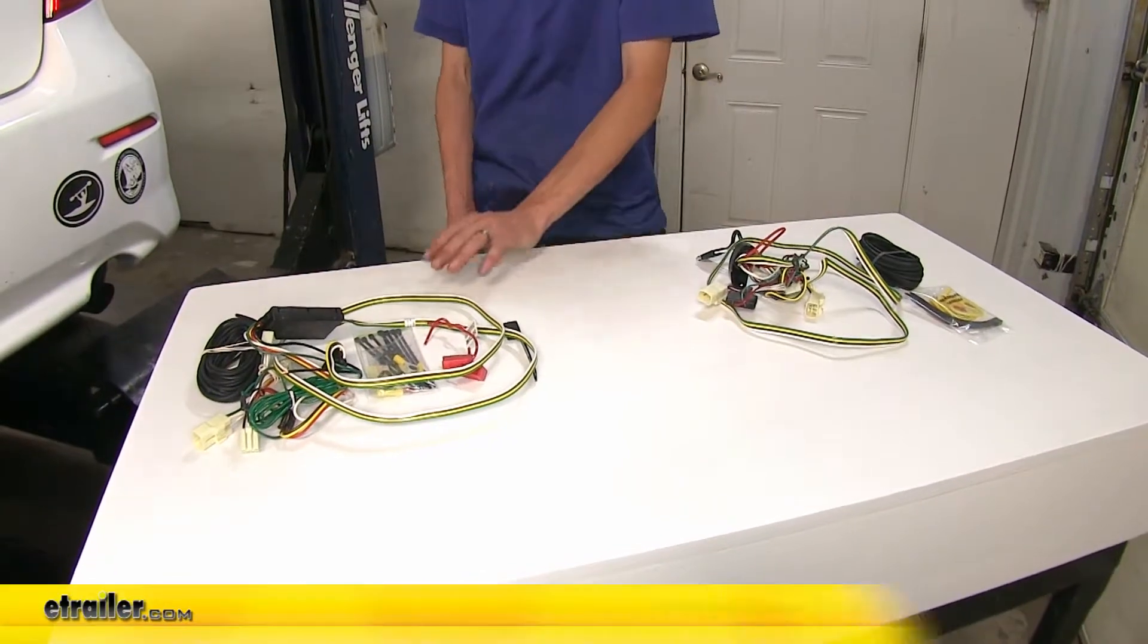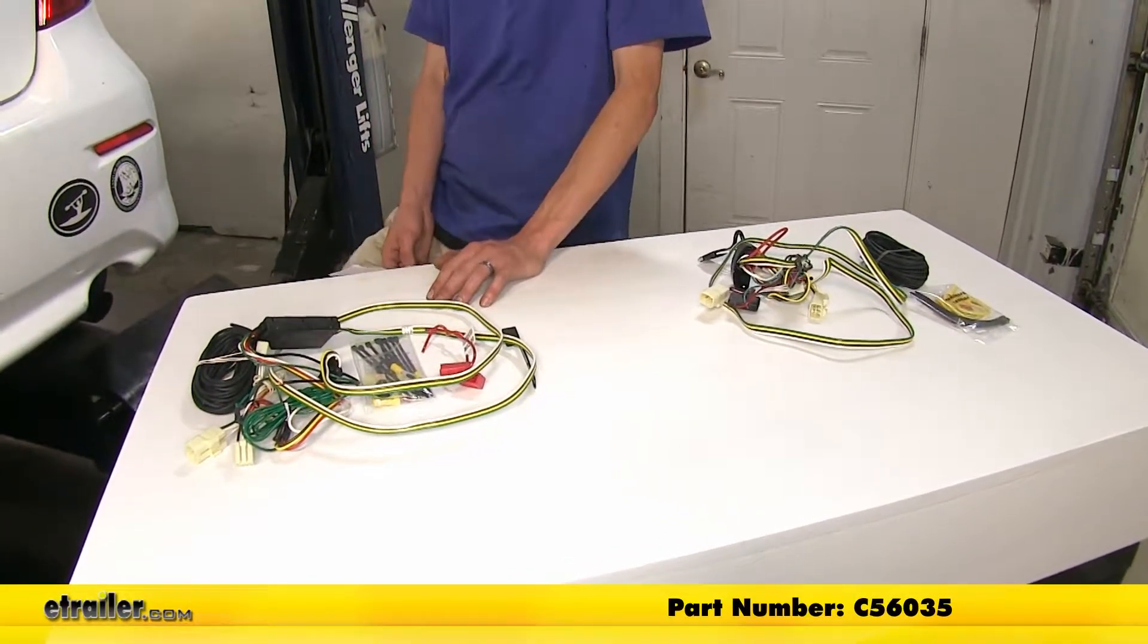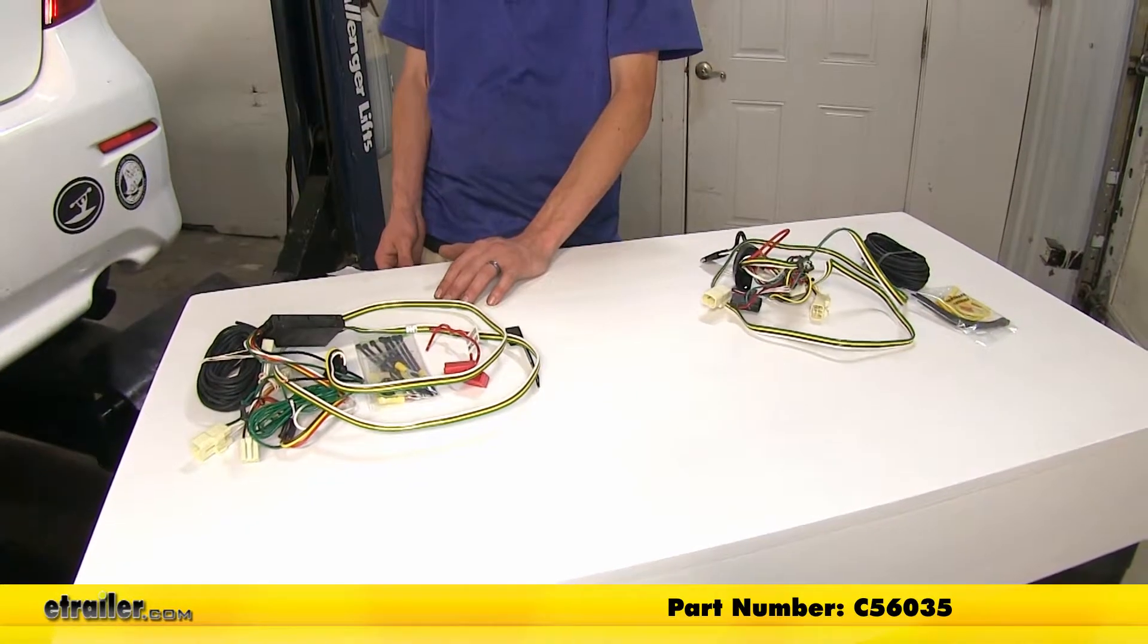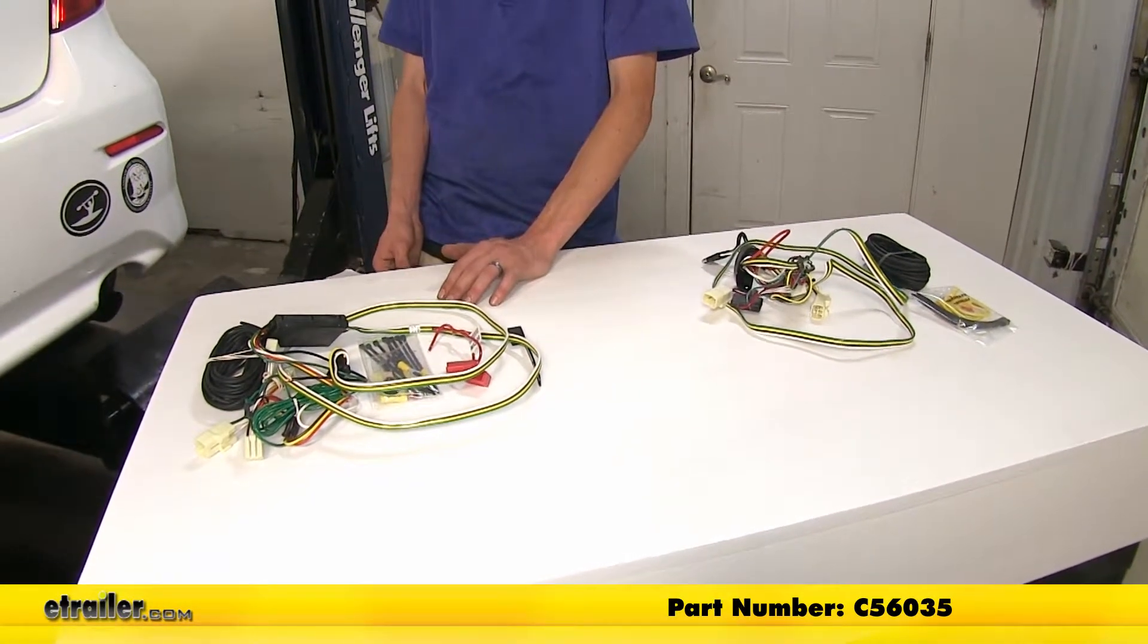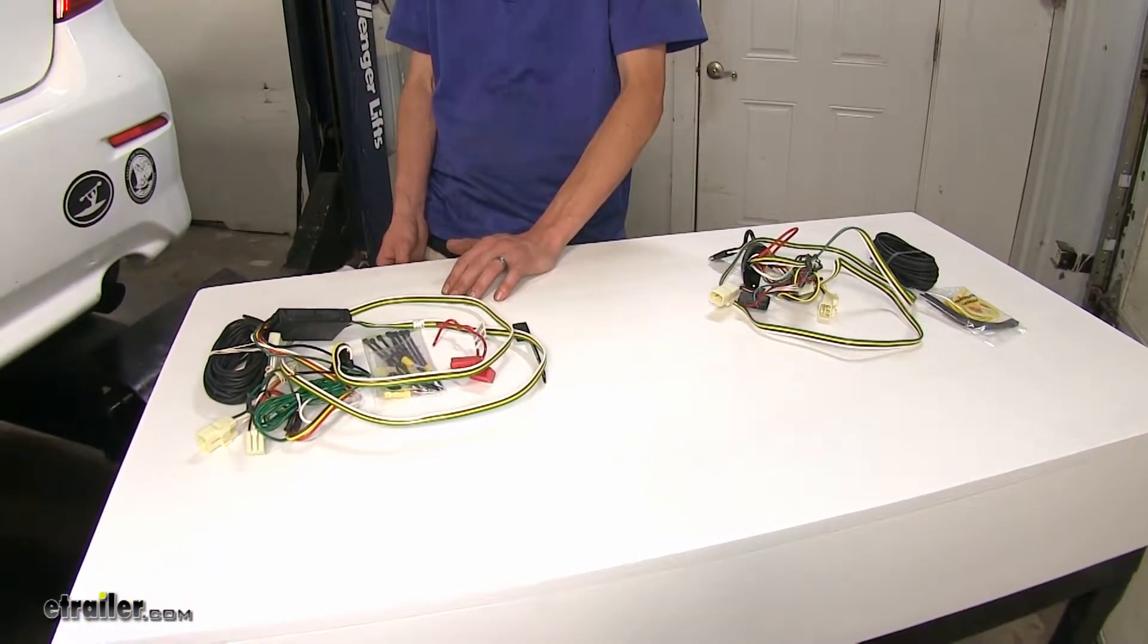Over here to the left, we have the Curt T-Connector vehicle wiring harness, also with a four pole flat trailer connector, part number C56035.